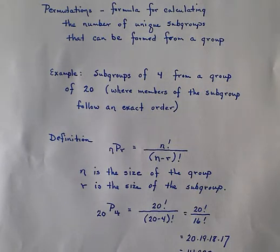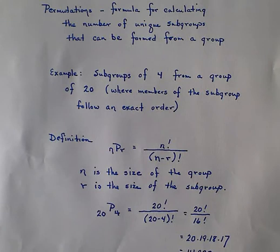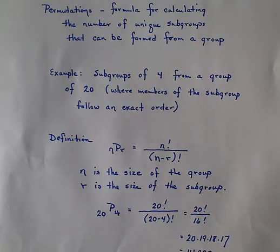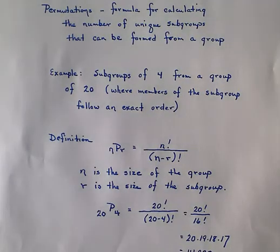Permutations and combinations will allow us to do that. A permutation is a formula for calculating the number of unique subgroups that can be formed from a group. What's important when talking about these unique subgroups is that the order in which they're selected is very important — each member of the subgroup fits into a specific position.